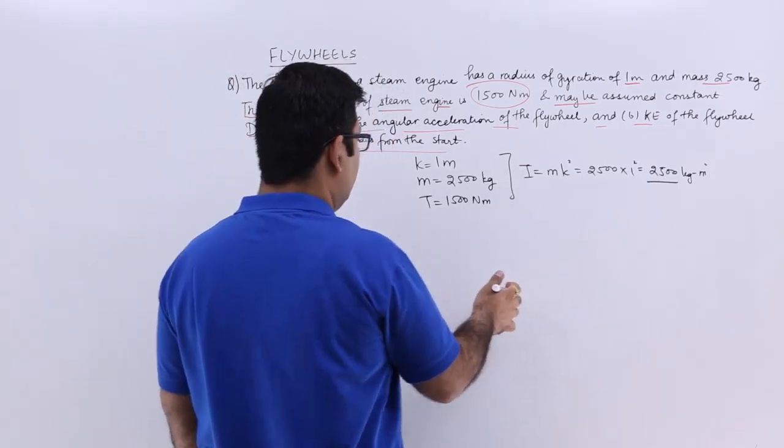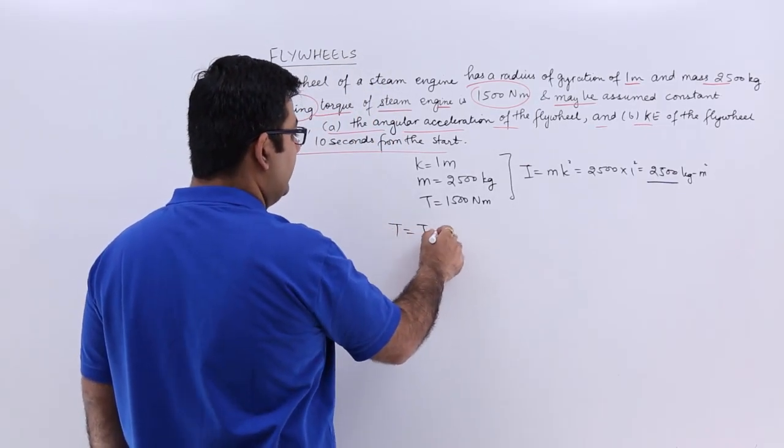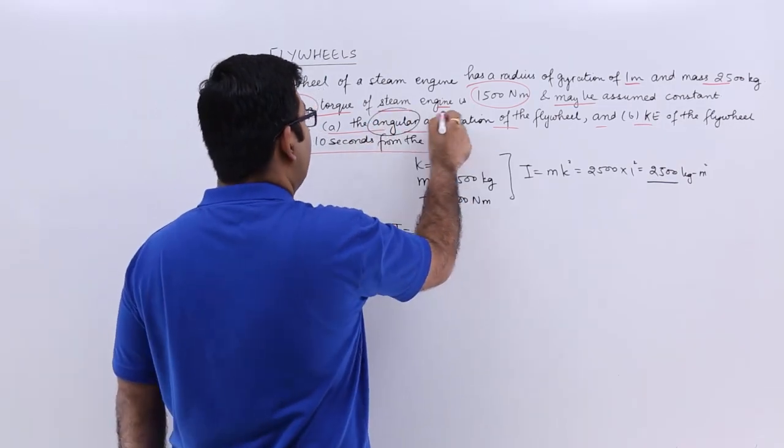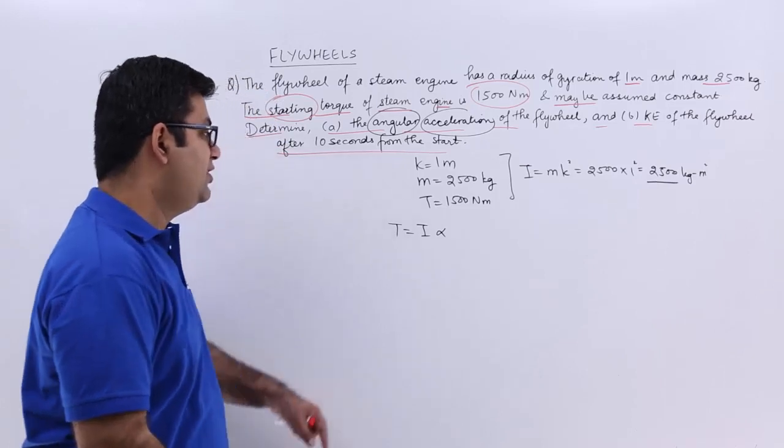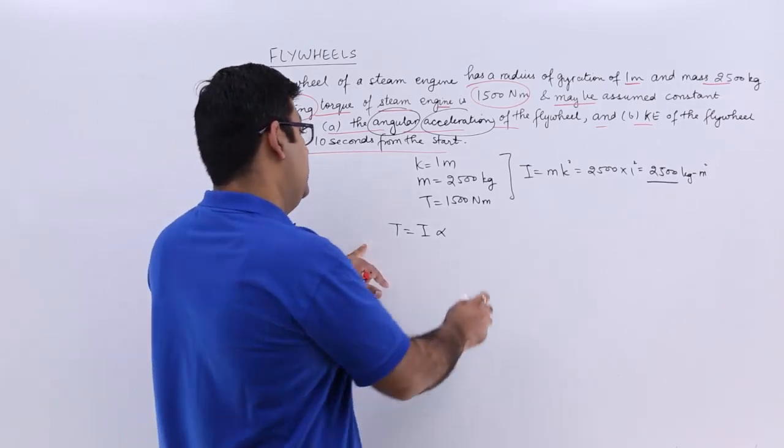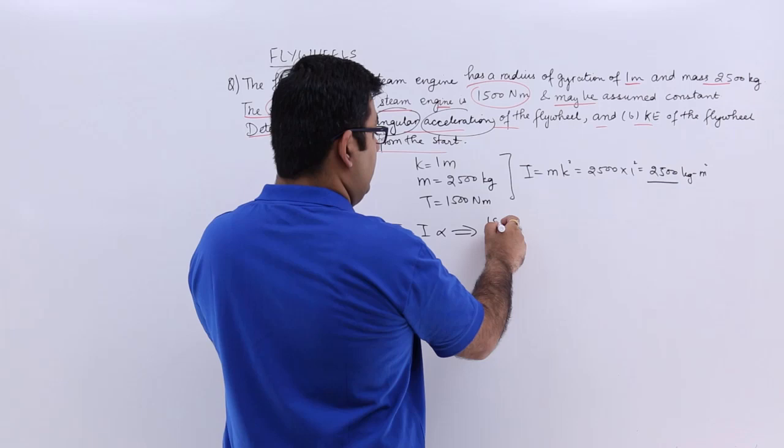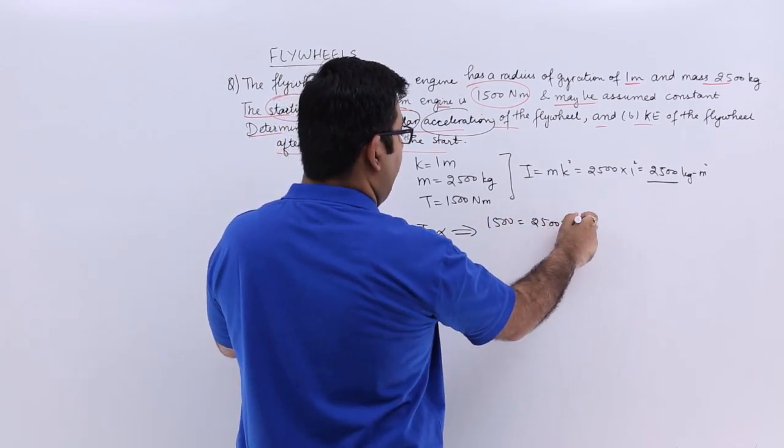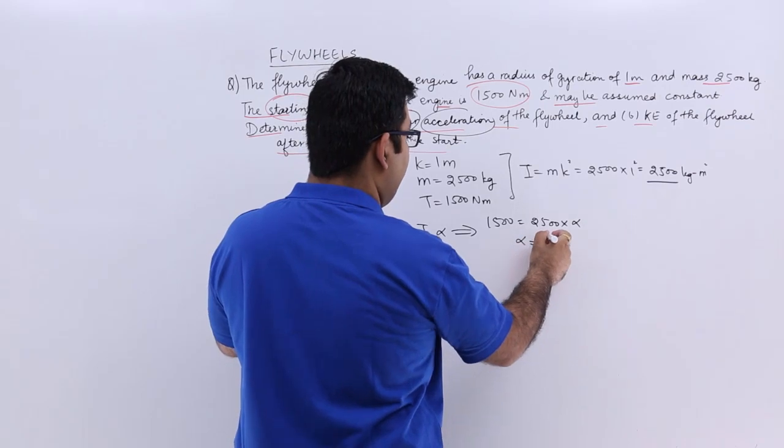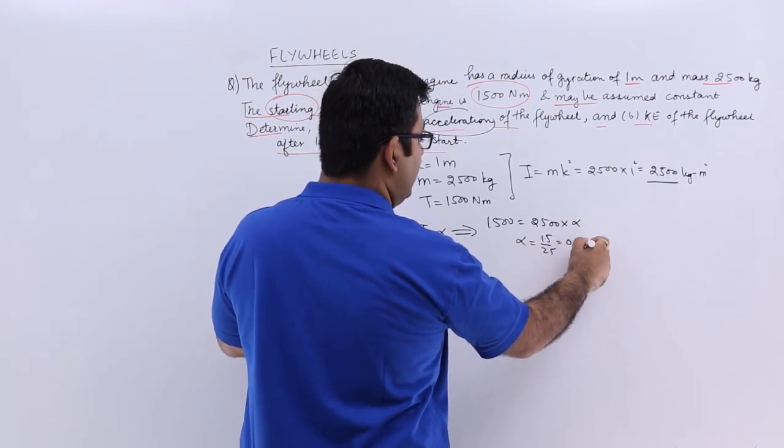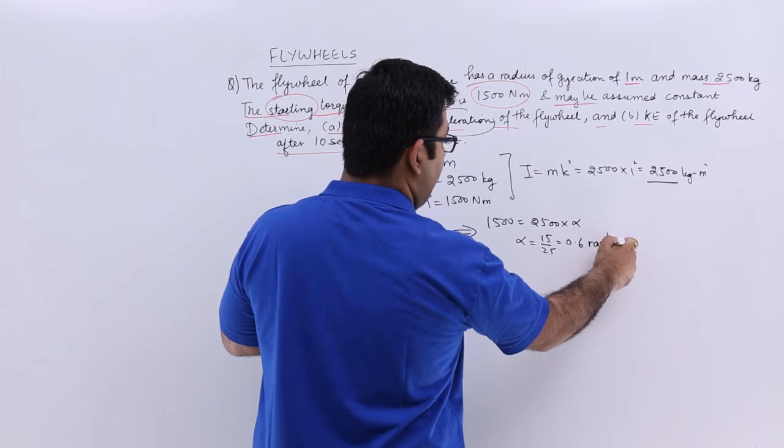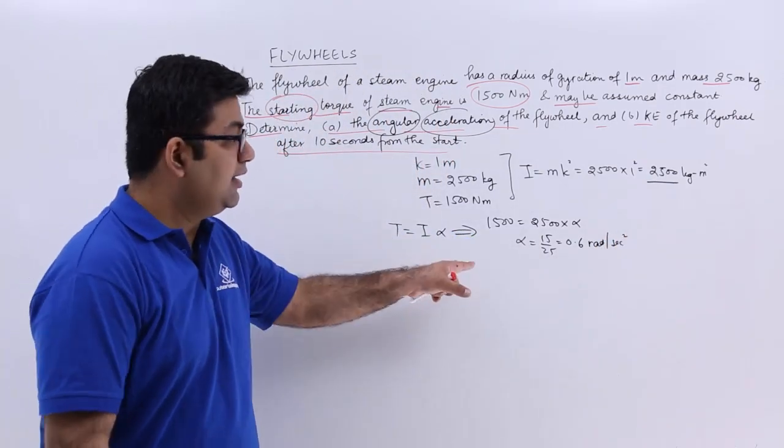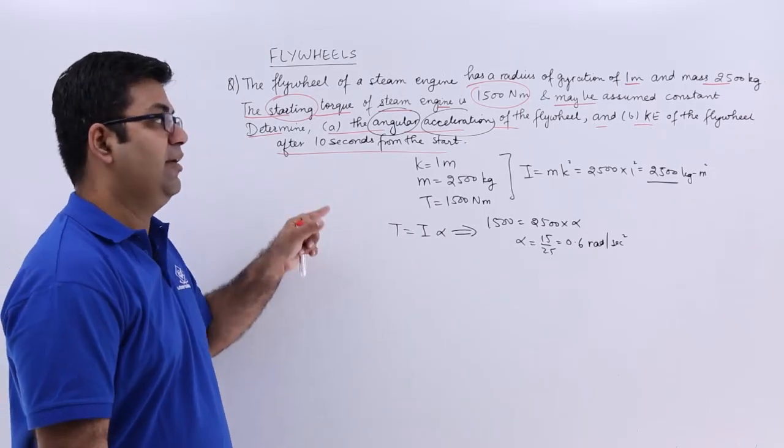Now we know that torque equals I times alpha, where alpha is the angular acceleration. From this expression I can find alpha. So 1500 equals 2500 times alpha. Therefore alpha equals 15 by 25, which is 0.6 radians per second squared. That is the angular acceleration of the flywheel.